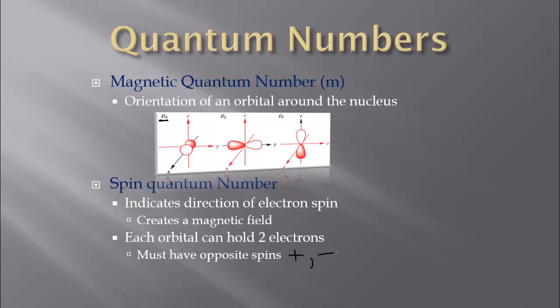When we are asking you to look at quantum numbers, we are going to focus on N and L. Could we start labeling M and the spin quantum number? Sure, but we're not going to get into that in this class. We're going to focus on the energy level and the type of orbital that it's going to be in.